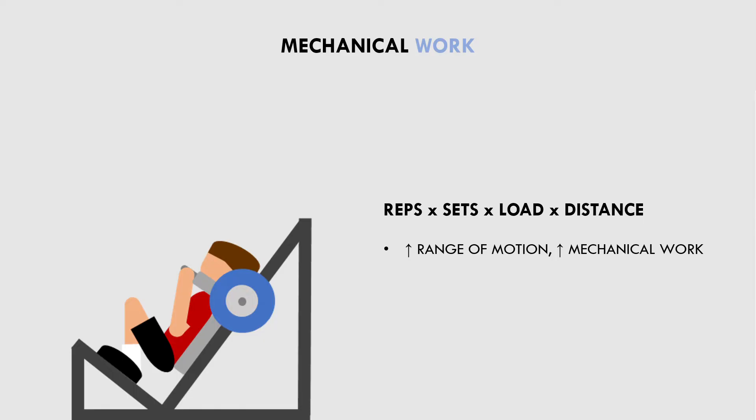However, we do know that volume load is probably not the best way to quantify volume for hypertrophy training, because we can achieve equal hypertrophy outcomes across a spectrum of different rep ranges and loads. If we were to use higher rep ranges and lighter loads, this would also result in greater mechanical work, but it doesn't mean that hypertrophy outcomes will be greater. So this mechanism doesn't fully explain why larger range of motion training is superior, but it provides some potential reason.